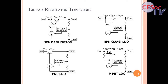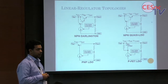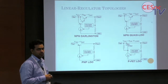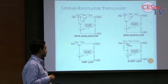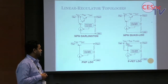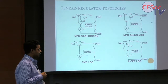These are the different kinds of LDO topologies. First, NPN Darlington — its problem is that it has a very high dropout voltage, around 2V_BE plus V_sat. It is good for low current applications because the bias current requirement is very low compared to other topologies, but dropout is very high, so for high current applications lots of power dissipation will occur.